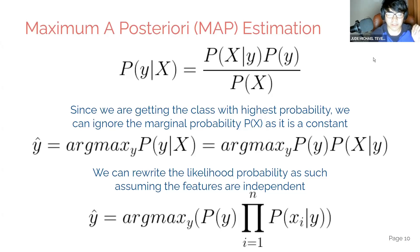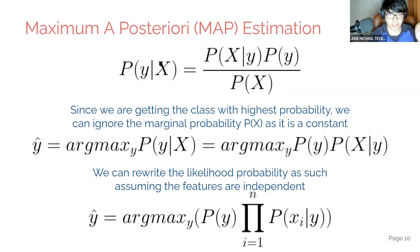Because we're just getting the maximum, there's no need to retain the marginal probability P(X), since it's essentially a constant. So we can remove it. The full Bayes equation becomes just the probability of Y times the probability of X given Y — the prior and the likelihood. Those are the ones we need to compute.